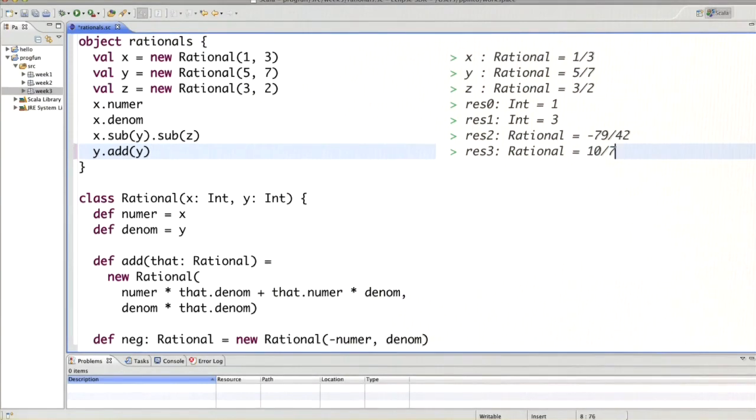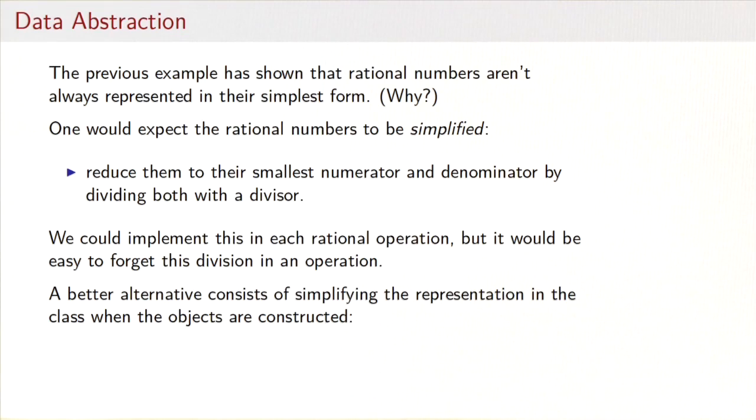So why is that? Well, it turns out to be able to do that we need to still simplify the rational number. When we produce them with the addition and multiplication operators it could be that we end up with numerators and denominators that can be further simplified by dividing both with a common divisor.